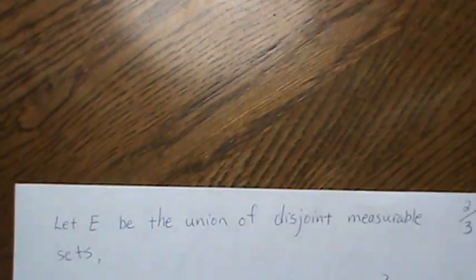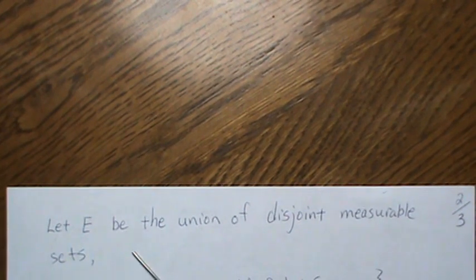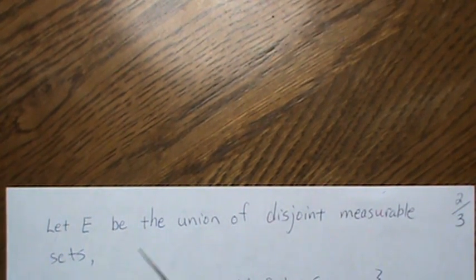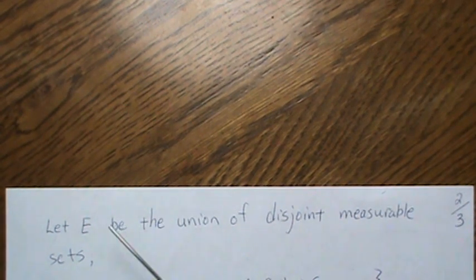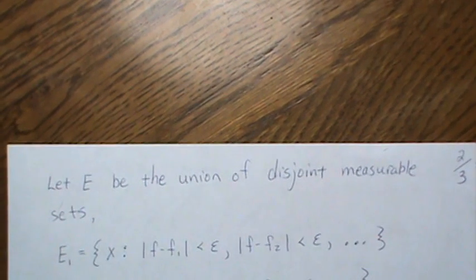Now we're going to set up some disjoint sets here. Now this integral we assumed on the set E and now we're going to create some disjoint measurable sets of E in a unique way.